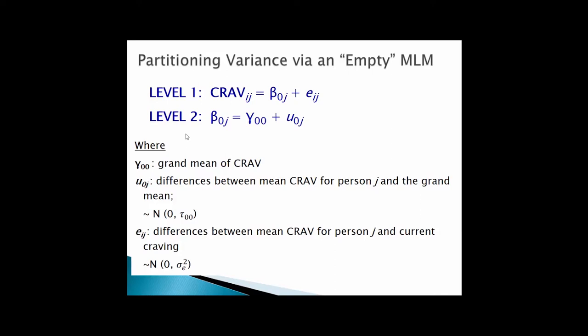Before modeling between and within-person differences, we might ask: what's the variance at each level? We can answer this using an empty multilevel model — an intercept-only model. At level one, craving for time i and individual j is a function of an intercept corresponding to that person's mean craving plus a residual for the deviation at that moment. Conceptually, you can think of level one as running a separate regression — in this case, just calculating a mean — for each person.